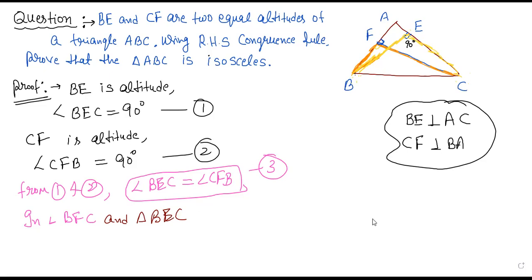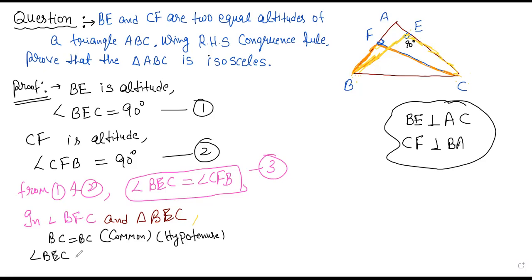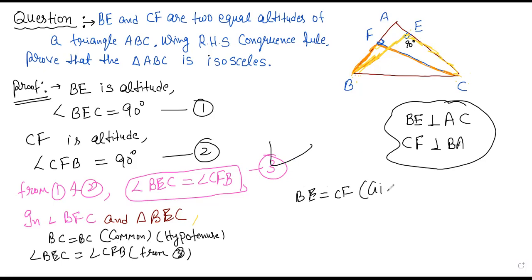In these two triangles, BC is a common side. BC is the common hypotenuse because these two triangles are right-angle triangles. And angle BEC is equal to angle CFB from equation three. Also, BE equal to CF — why? Because it is given: the question states two equal altitudes.